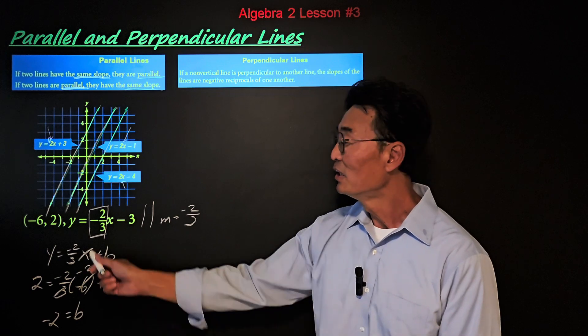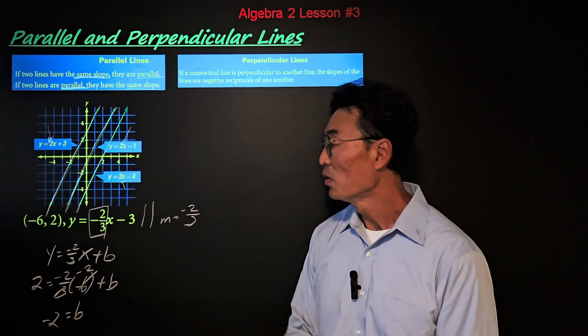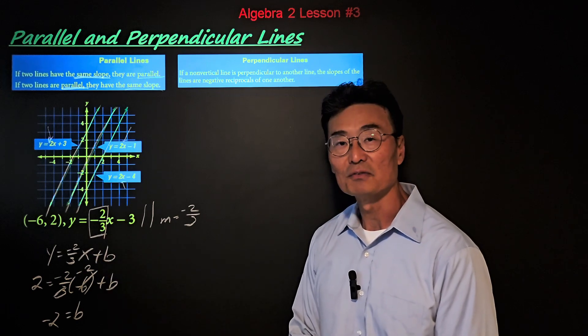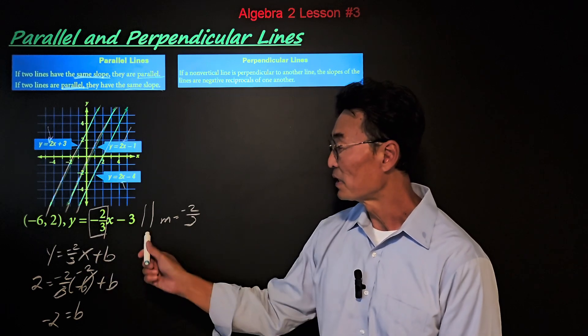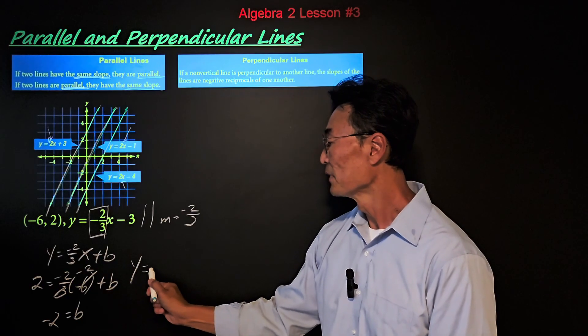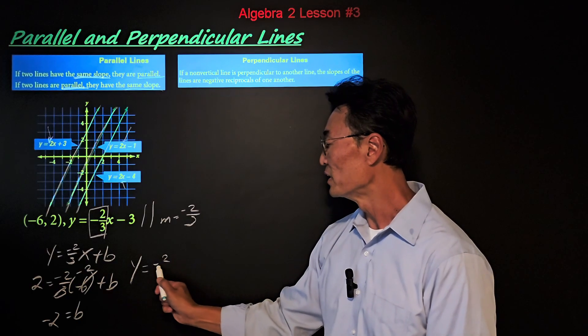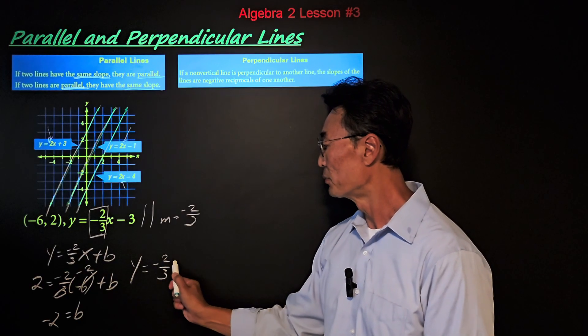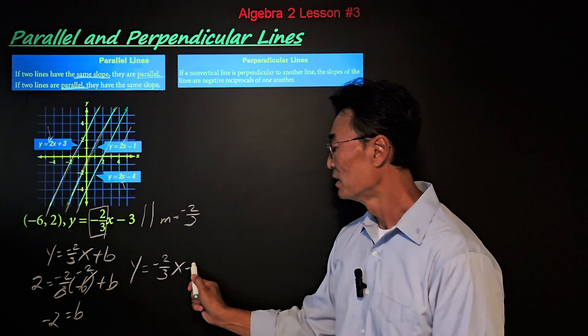Then our final answer — the equation of the line that's parallel to y equals negative 2 over 3x minus 3 — is going to be y equals negative 2 over 3x minus 2.